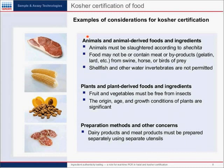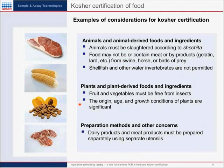Examples of considerations for kosher certification: similar to halal, animals must be slaughtered according to religious laws. Food may not be or contain meat or byproducts from swine, horse, or birds of prey — this is very important when looking at gelatin and lard, which are frequently ingredients in a wide variety of food. For kosher determination, shellfish and other water invertebrates are not permitted. Plants, fruits, and vegetables must be free from insects, as the presence of insects will render a food non-kosher. The origin, age, and growth conditions of plants are significant in determining whether a plant, fruit, or vegetable is, in fact, kosher.